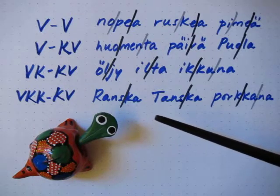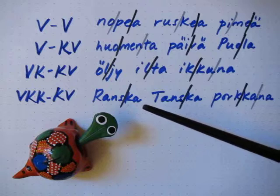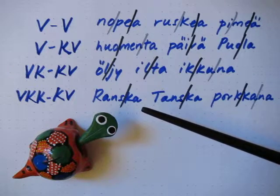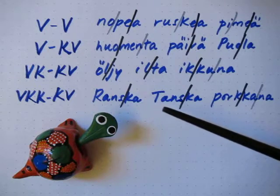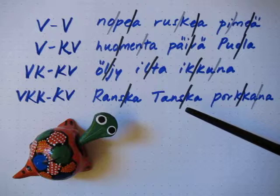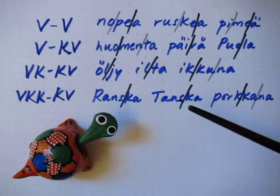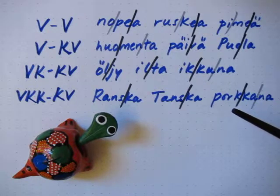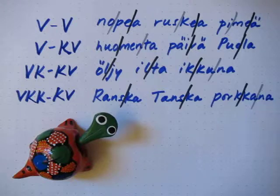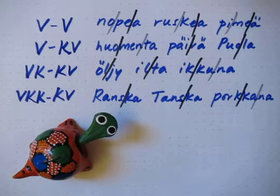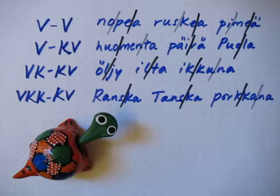And lastly, vokaali-konsonantti-konsonantti-konsonantti-vokaali. Example words: ranska, tanska, porkkana. As you learn new vocabulary, understand where the syllable breaks are for each new word to practice this.